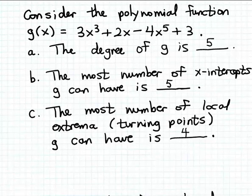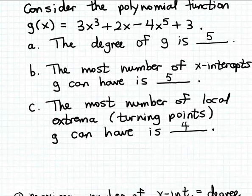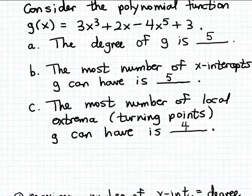So altogether, to review: the polynomial function g has degree 5. The most number of x-intercepts it could have is also 5, and the most number of turning points the graph of g can have is 4.